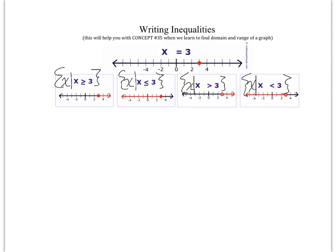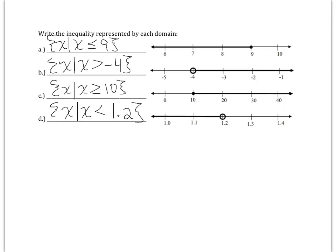Here are the answers to the next four practice problems. Notice I used set notation with 'x such that.' Problems a and c have the line on the inequality symbol because they have closed dots, while b and d do not because those are open dots. Also notice: if you put your variable first, the inequality symbol points in the same direction as the shading arrow. That little trick only works if you write your variable first.